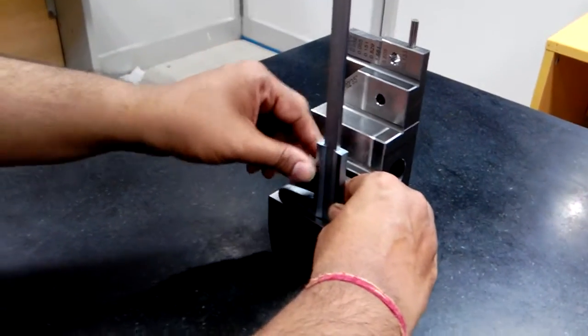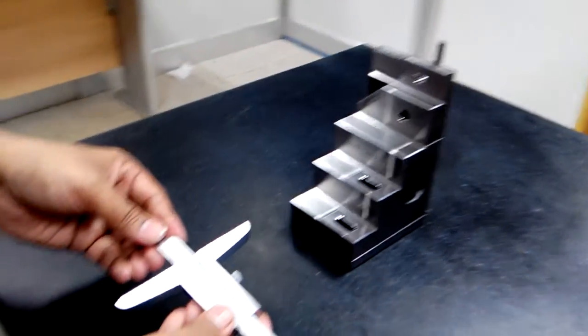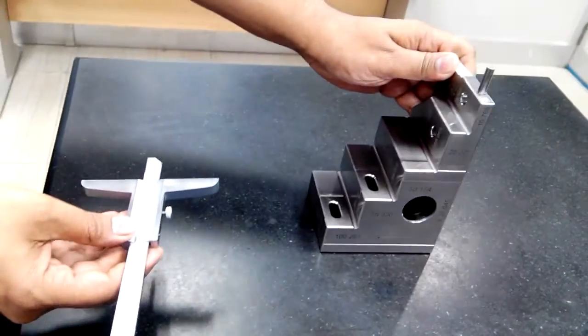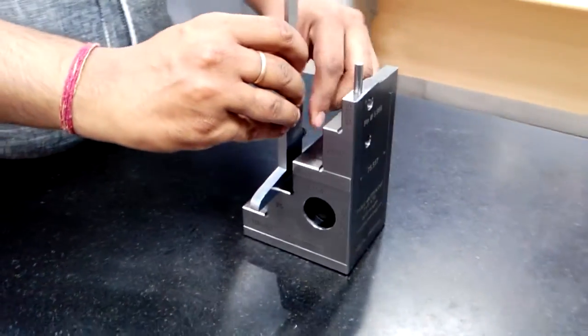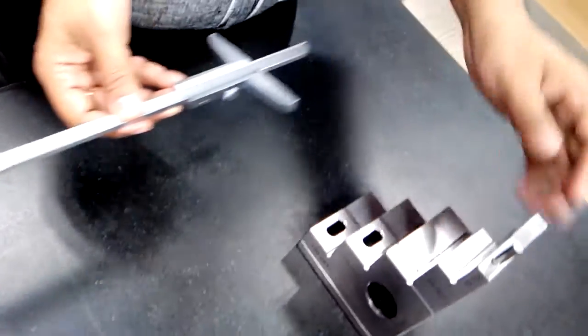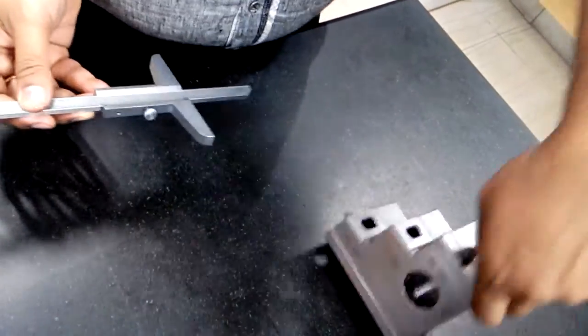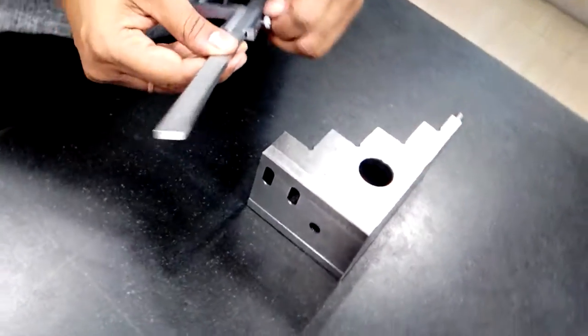We will screw it in and check the reading against the actual reading. Now we will take the second reading on 60. Similarly, you can check the third reading on 75.